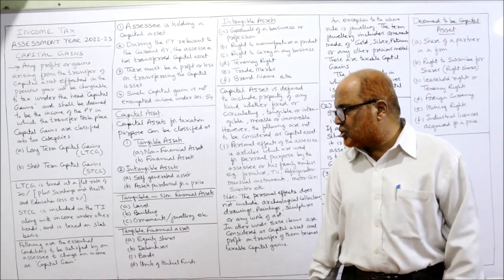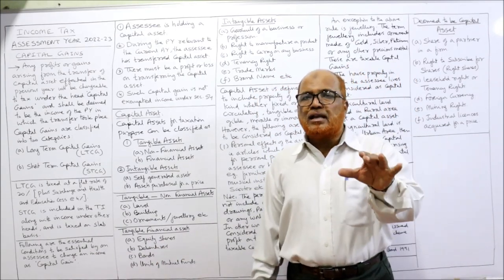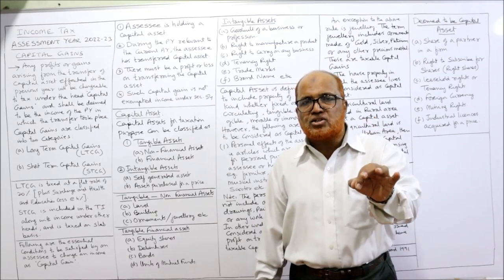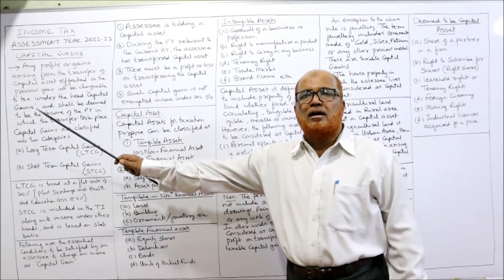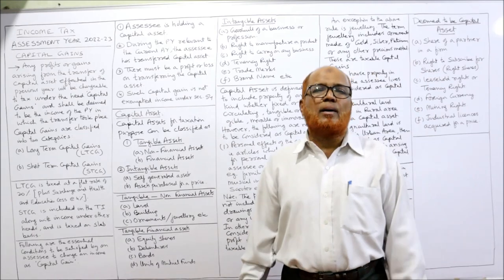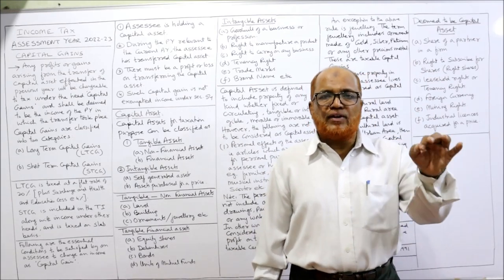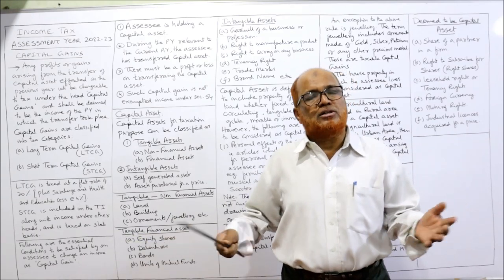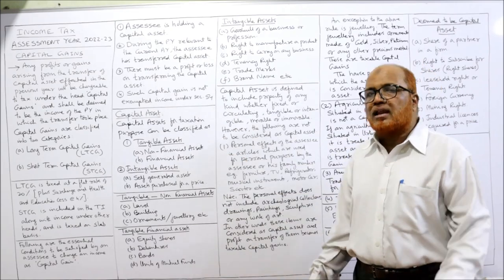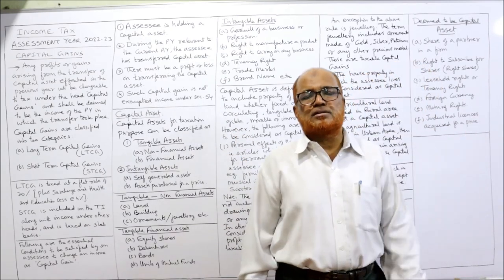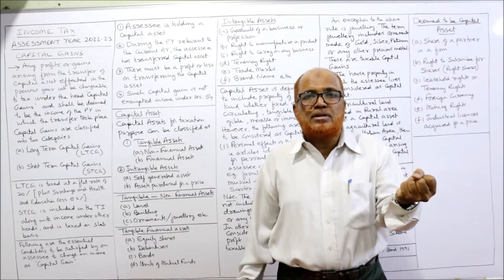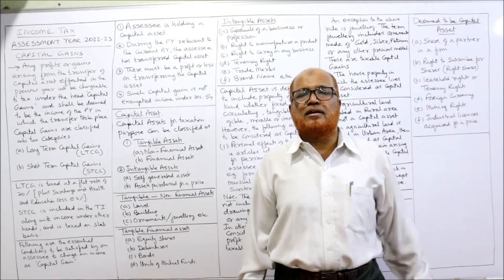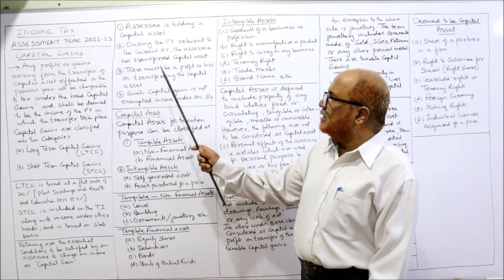Now, following are the essential conditions to be satisfied by an assessee to charge income under the head capital gain. The first condition is that the assessee must be holding a capital asset — if the assessee is the owner of a capital asset and transfers it, only then capital gain arises; if he is not holding the capital asset, there is no tax under capital gain. Secondly, during the previous year relevant to the current assessment year, the assessee must have transferred the capital asset. Just holding the capital asset does not create capital gain.